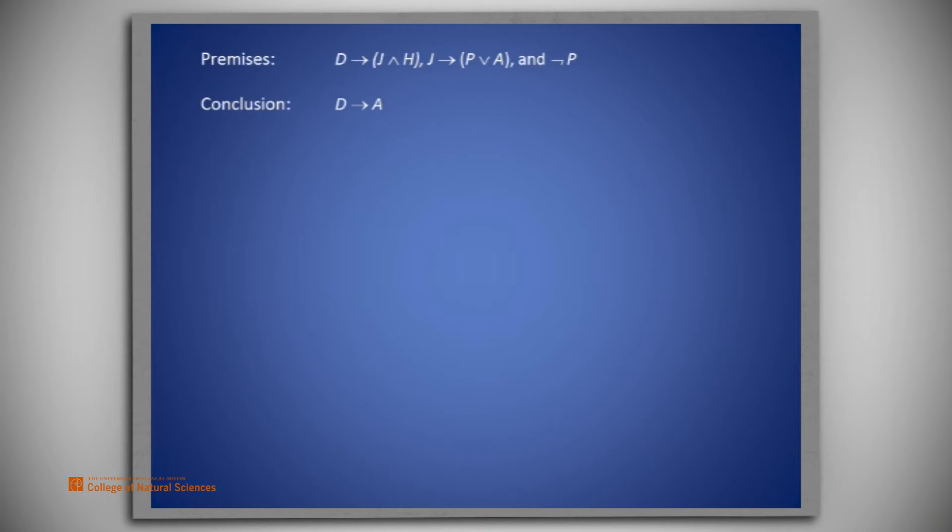The premises of this problem are D implies J and H, J implies P or A, and not P. The conclusion is D implies A. So what strategy could we use to obtain this?